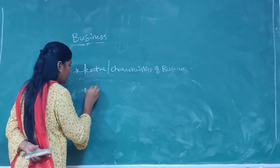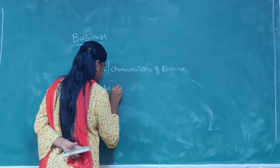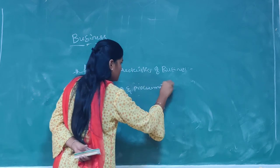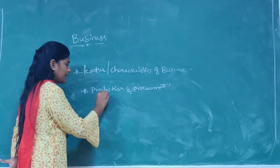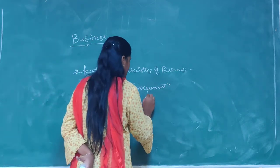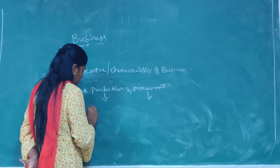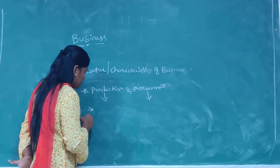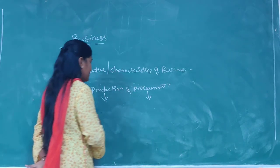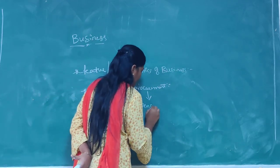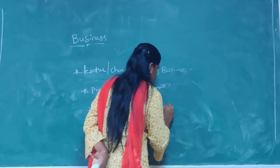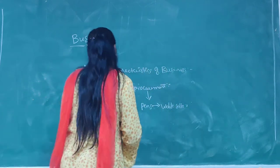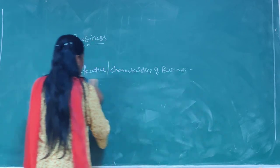We have another feature called production and procurement. Some businesses may be related to production and some to procurement. For example, if you want to sell a pen, you may have a factory and produce them to sell to customers. Or another option would be to procure the pens from a wholesaler and sell them to your customers as a retailer. We have now completed the features of business.